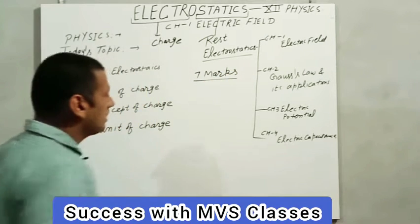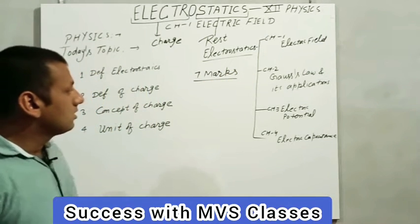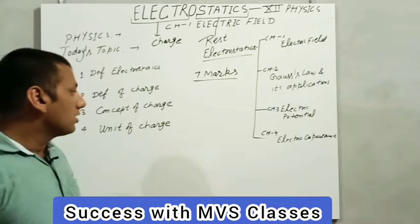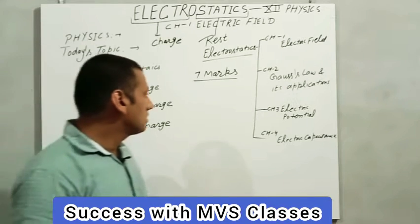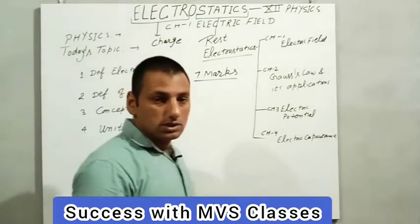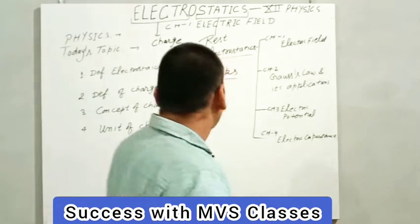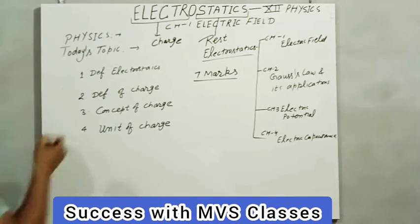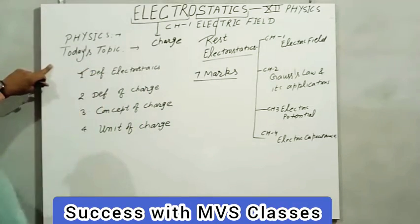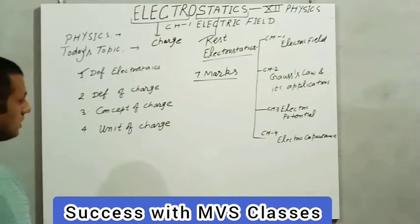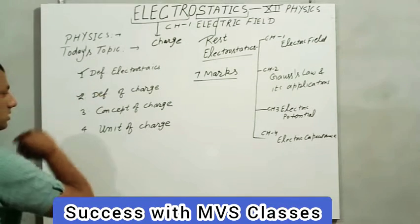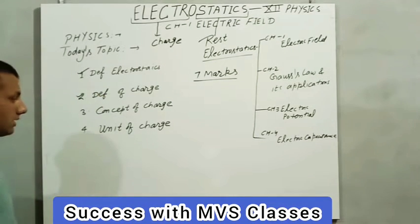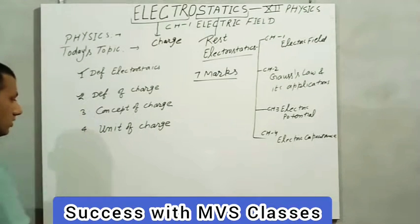These four chapters carry 7 marks. Today our topics are: first, definition of electrostatics; second, definition of charge; third, concept of charge; and fourth, unit of charge.